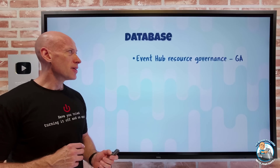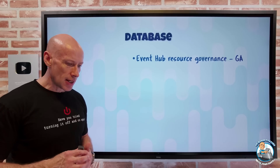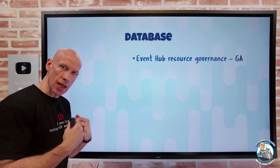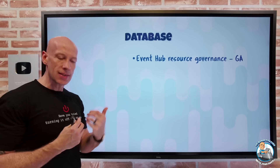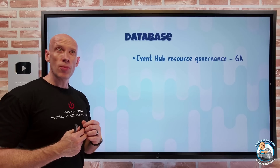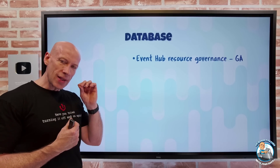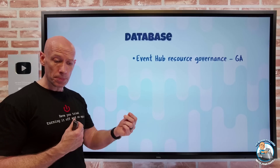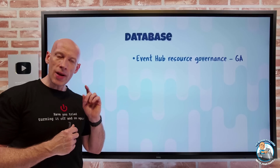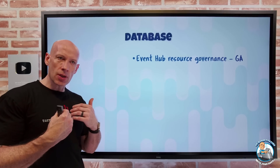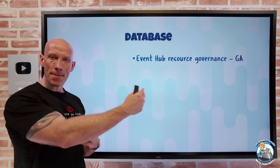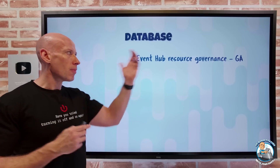On the database side, Event Hub now has resource governance. For the premium and dedicated tiers, you can group client applications - those connecting to Event Hub for both publish and consumption - into application groups. You might create an application group of lower priority clients and apply throttling to those groups in terms of bytes or messages per second. This means lower priority app groups are throttled to a certain level so they don't interfere with more important applications and potentially impact their performance.